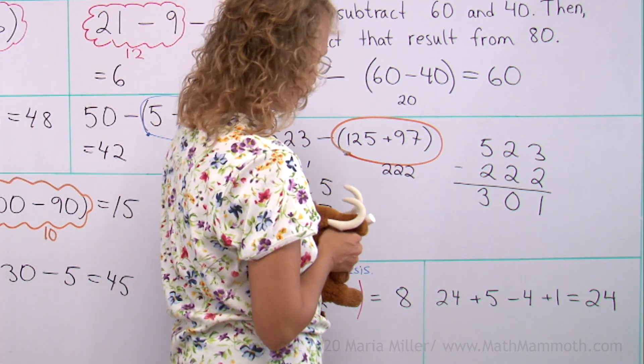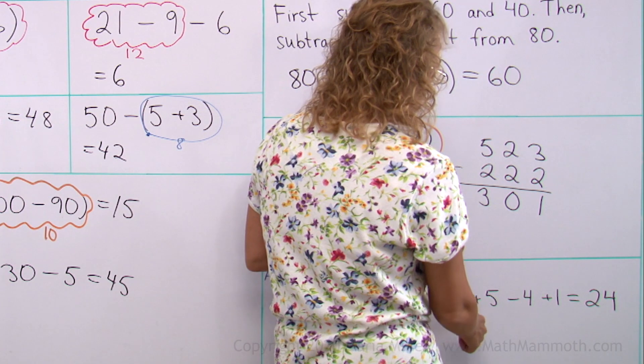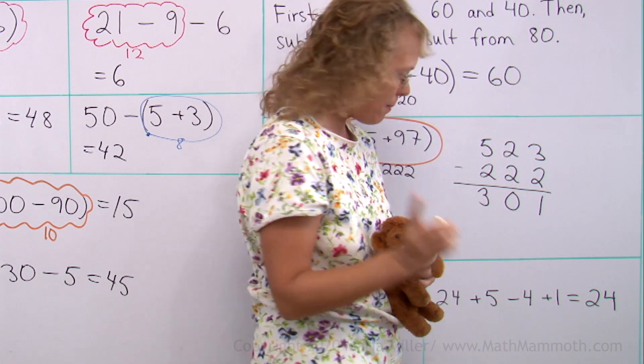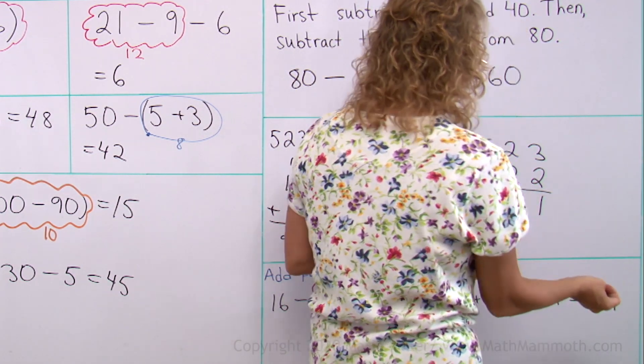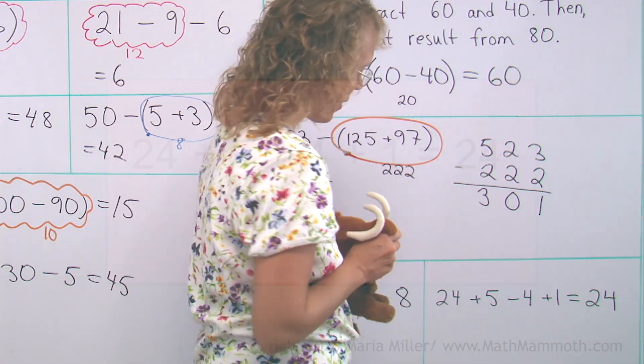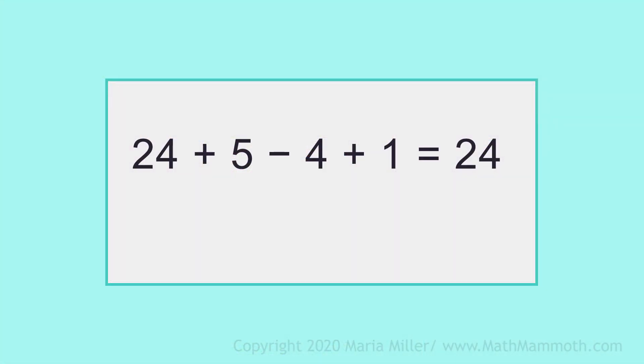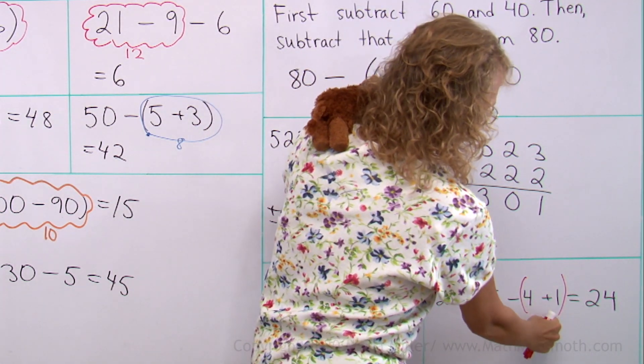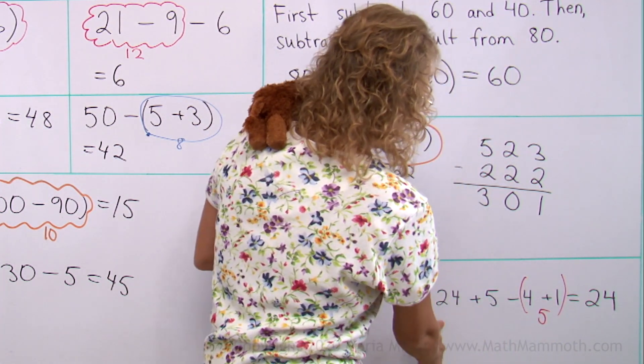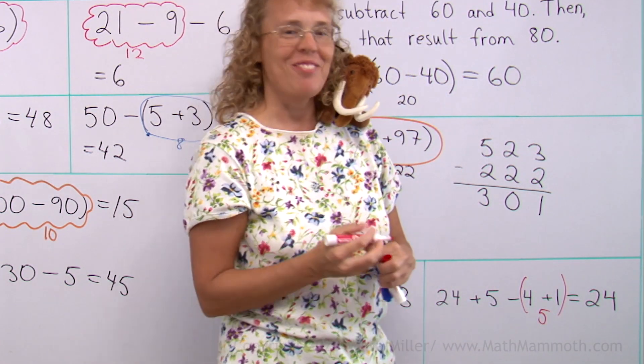How about the other one? That's a little harder. 24 plus 5 would be 29. Minus 4 would be 25. Plus 1 would be 26. So, it's not right. Now you have more places to put your parentheses. Matt is thinking. Are you thinking too? Okay, let's check. Come on up. 4 plus 1 equals 5. So, 24 plus 5 minus 5. Yes, that's correct. Good job, Matthew.